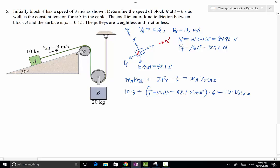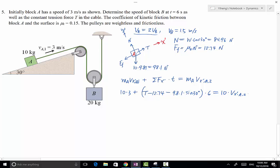However, don't forget, this equals 10 times VB2 times 2, because VA equals 2 VB2. So we have this one equation, but with two unknowns, T and VB2. Right now we cannot solve for either one of the unknowns. That's okay, let's move on to free body diagram of block B.